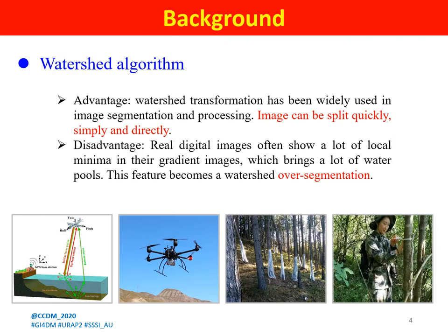On the other hand, real digital images often show a lot of local minima in their gradient images, which brings a lot of false pulses. This causes watershed over-segmentation.